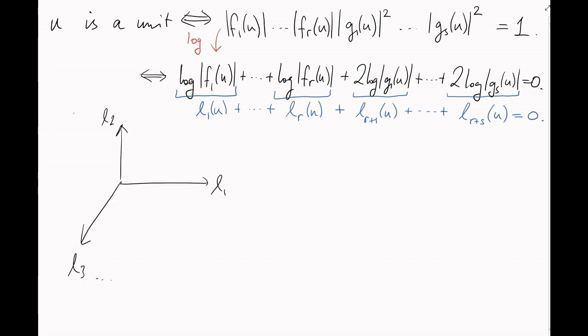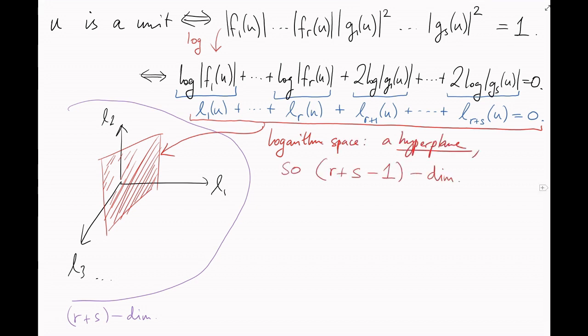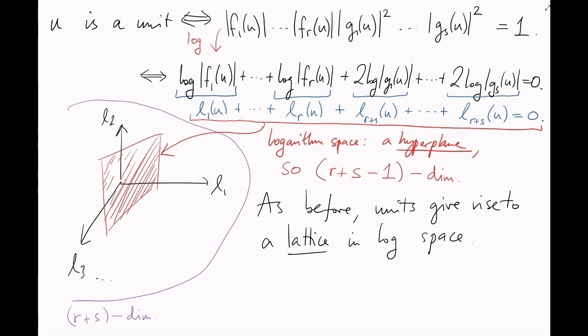So our units lie inside some R plus S dimensional space. In fact, they all lie on this hyperplane defined by this equation here, which is an R plus S minus 1 dimensional space. And as before, it's not hard to see that they're going to form a lattice inside this space.